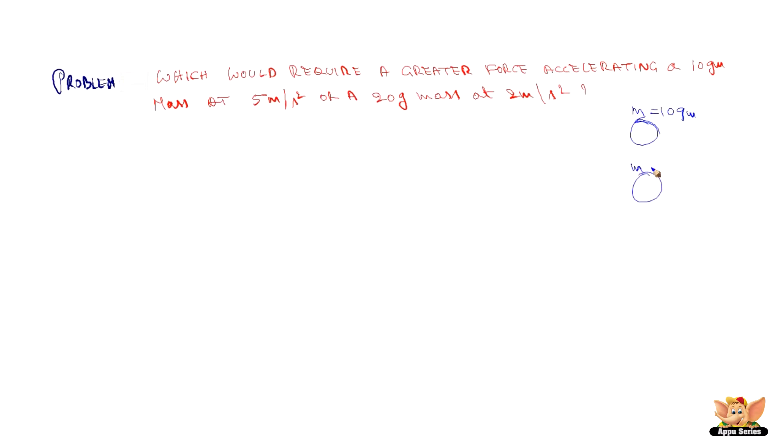So we have an object whose mass is 10 gram, another object whose mass is 20 gram. Now this 10 gram mass is moving at an acceleration of 5 meter per second square, and 20 gram mass is moving at an acceleration of 2 meter per second square. Now we want to know which one will require a higher force. Compare F1 and F2. Given data is the mass in each case and acceleration. So we can find out F1.